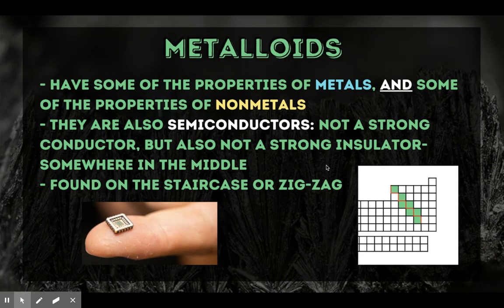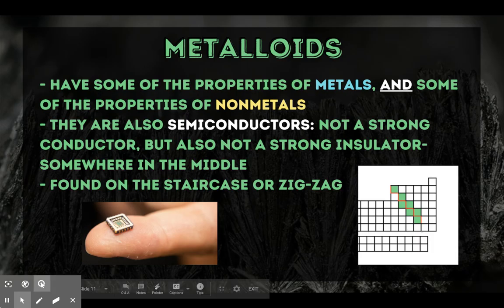Now let's talk about metalloids. They're kind of like the oddball of the periodic table — they take the properties of metals and the properties of nonmetals. So if you know the Pokémon Ditto, it's kind of like the Ditto of the periodic table. They are semiconductors: not a strong conductor, but also not a strong insulator — somewhere in the middle. And they are found on the staircase or the zigzag, so they're usually the easiest to find. And that is it for our metals, nonmetals, and metalloids.